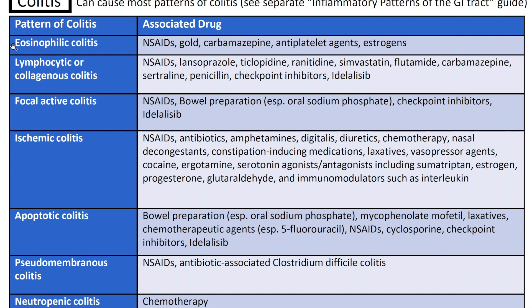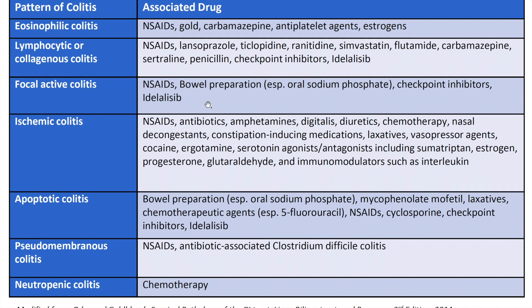Next up we're going to get into the colitis. Medications can cause most patterns of colitis. There's a separate section on inflammatory patterns of the GI tract you can reference. There are several patterns with associated drugs that can cause them. The patterns include eosinophilic colitis, lymphocytic or collagenous colitis, focal active colitis, ischemic colitis, apoptotic colitis, pseudomembranous colitis, and neutropenic colitis. Review the table and be aware of the various drugs that can cause these patterns.